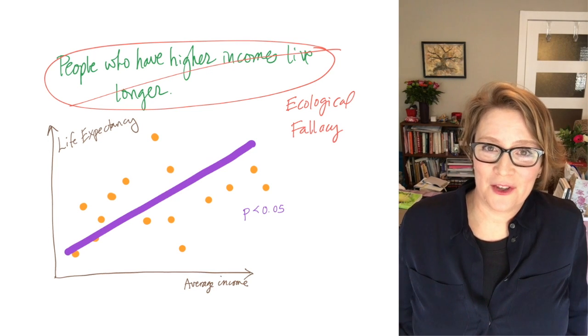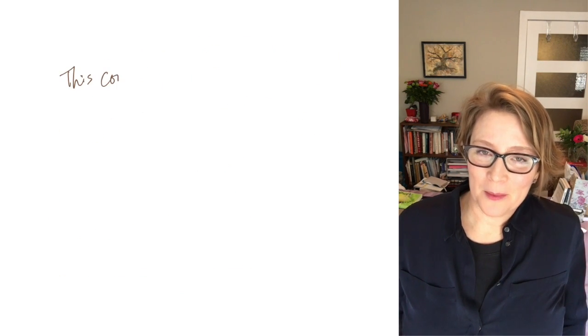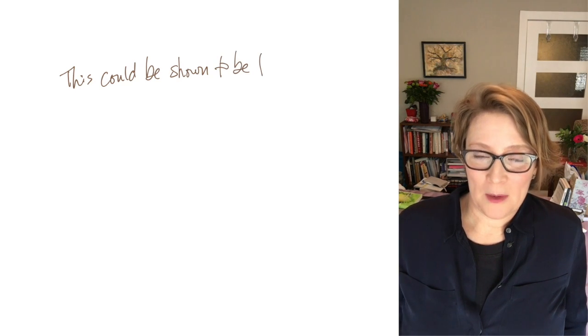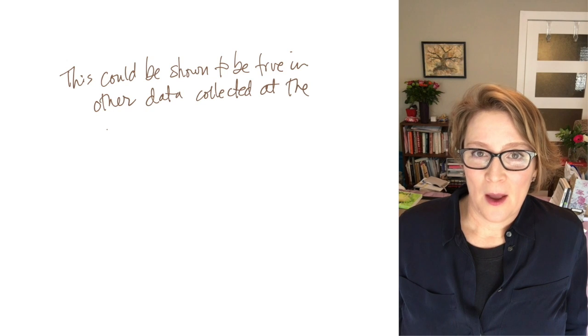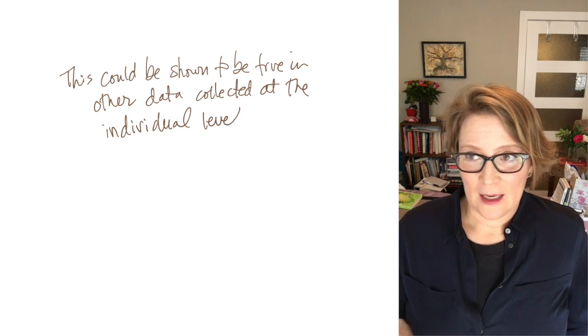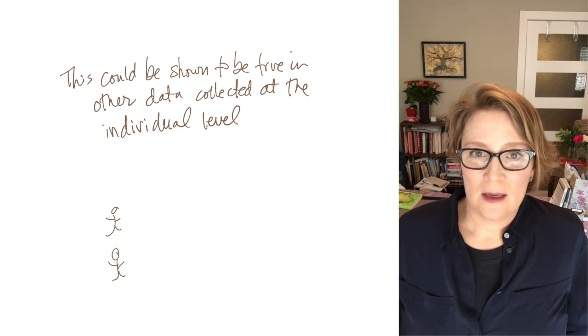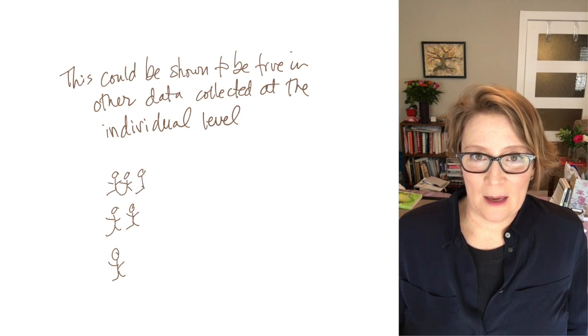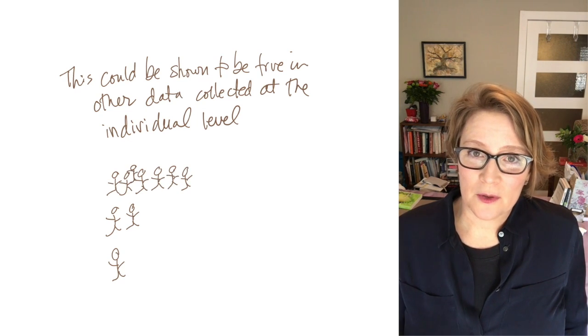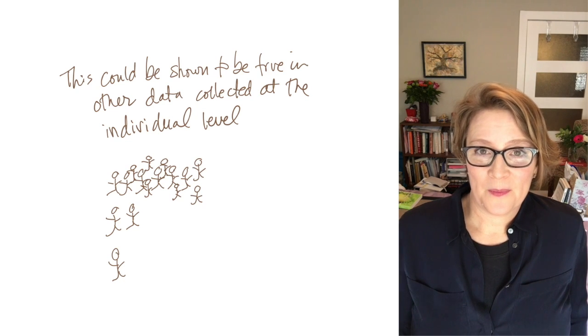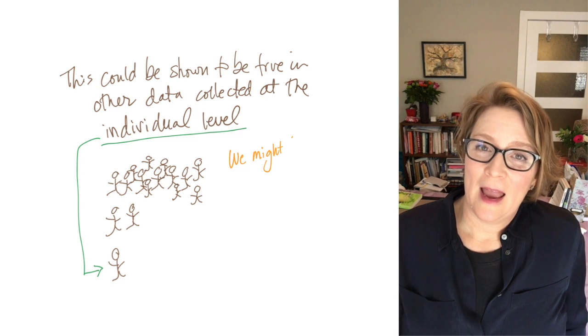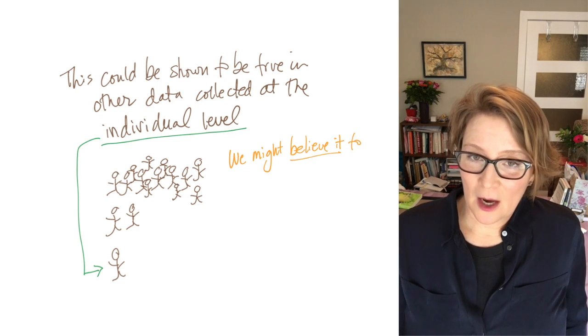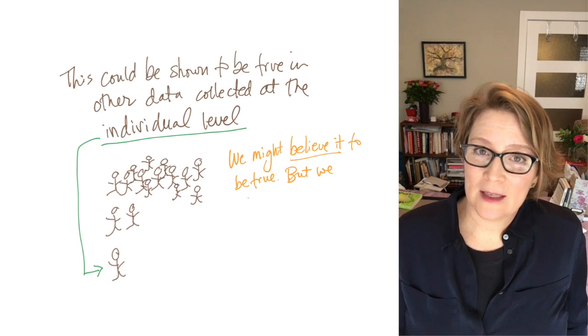We know from other research, from other data sets, that it probably is true that individuals with higher incomes live longer. That data is collected at the individual level, and then you can make claims about what's going on with an individual association. So although we believe that there is a positive association for individuals between income and life expectancy, based on this country-level data, we cannot say that.